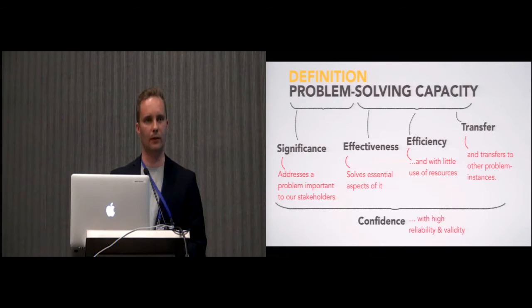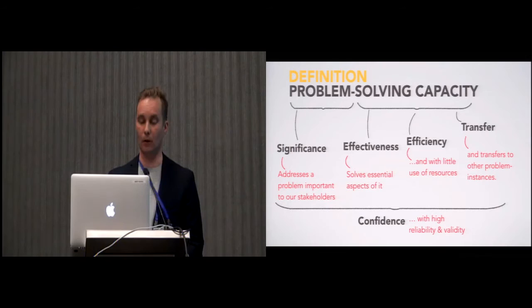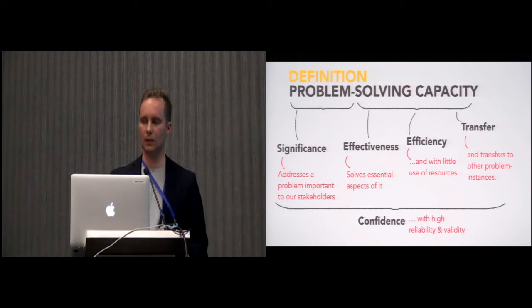With Kasper, we added a fifth criterion called confidence, which refers to these traditional concerns that we have about the logic of argumentation, or validity, reliability, and so on. Now, this is the definition of problem solving capacity.